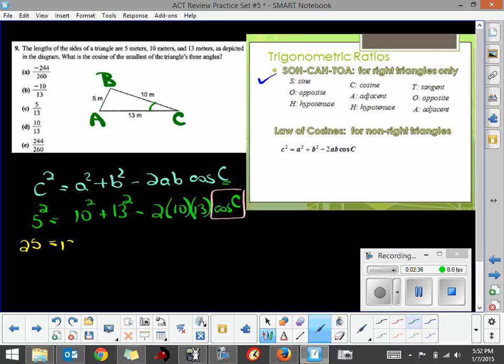Now I'm going to do some simplifying. That's 25 equals 100 plus 169. Minus, this is 2 times 13 is 26 times 10 is 260, cosine of C.